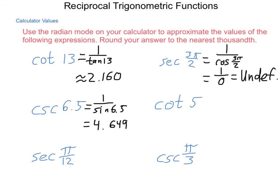Next, now that we have a little bit of a rhythm, the cotangent of 5 is 1 over the tangent of 5, which is negative 0.296.